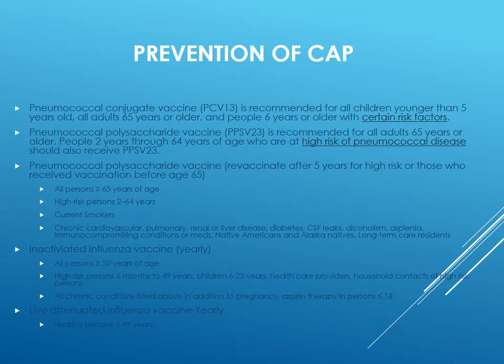Let's talk about prevention of community-acquired pneumonia. It used to be that we gave one vaccine, but now there are new recommendations to give two vaccines. All adults over the age of 65 should receive the PCV13, and then you need to follow that with the PPSV23 six to twelve months later. The recommendations for the PPSV23 have not changed, so if you've learned those before, nothing's changed.